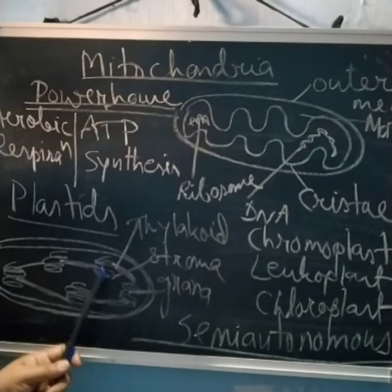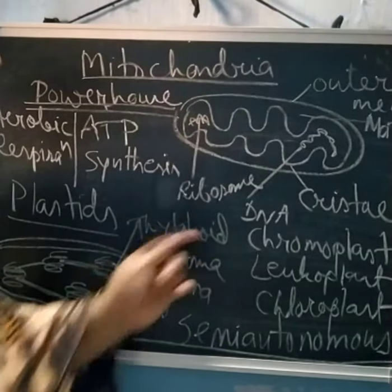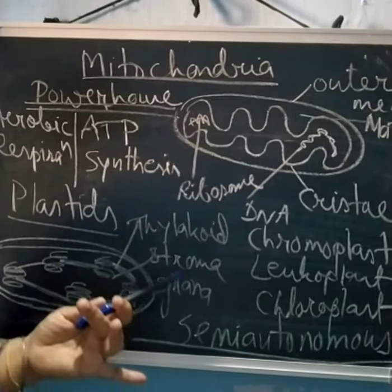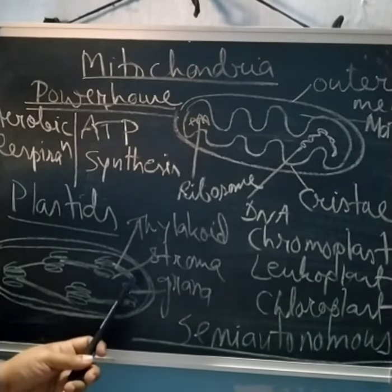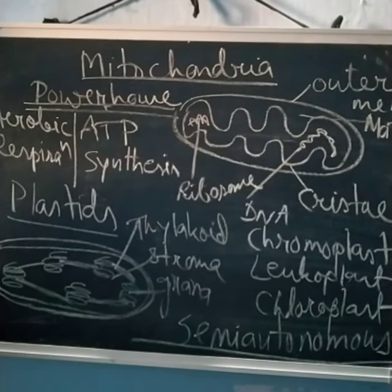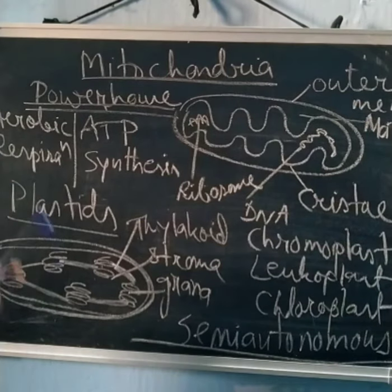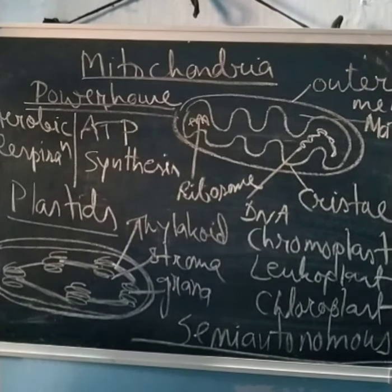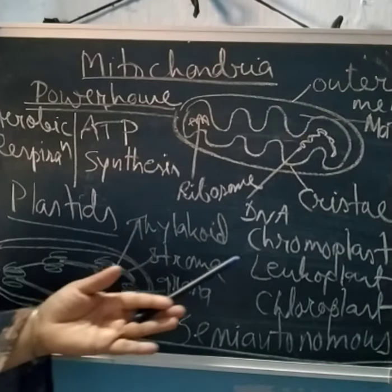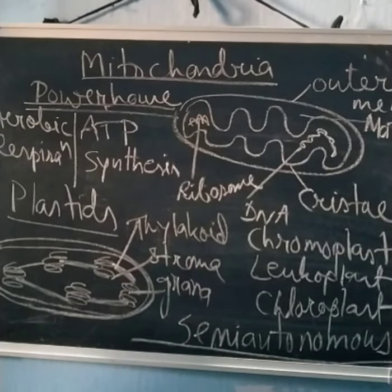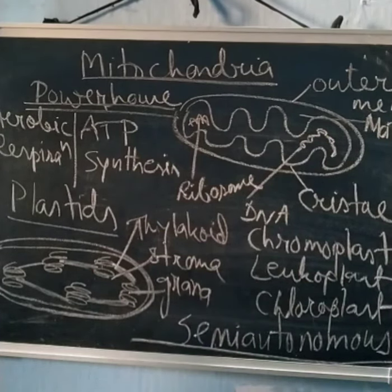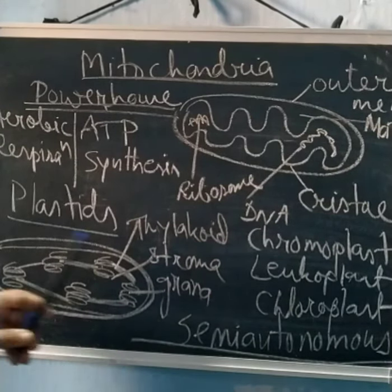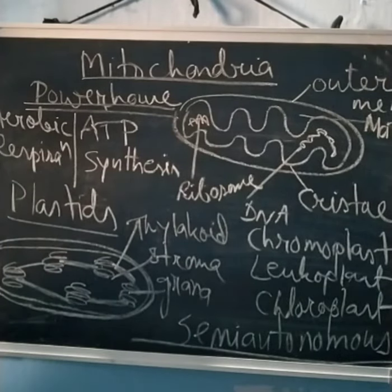Plastids also bear DNA, making them semi-autonomous organelles that can multiply themselves — just like mitochondria. The difference between leukoplast and chromoplast: leukoplasts are colorless and store food, normally occurring in roots, while chromoplasts are reddish-to-brownish in color, do not store food, but provide coloration to organs and attract pollinators.